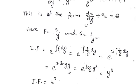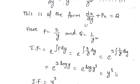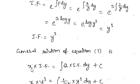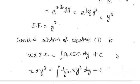Using the identity log(m^n) = n·log(m), we write 3·log y = log y³. Then using e^(log f(x)) = f(x), we get the integration factor as y³.